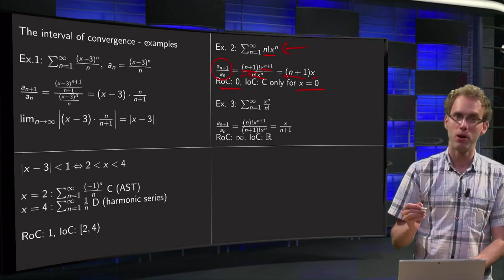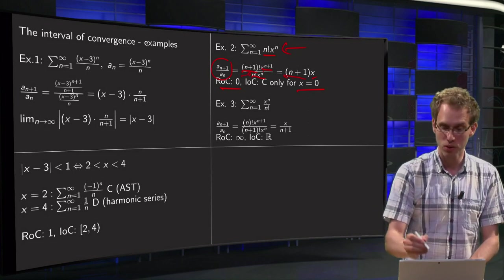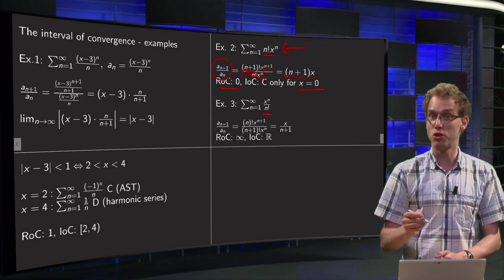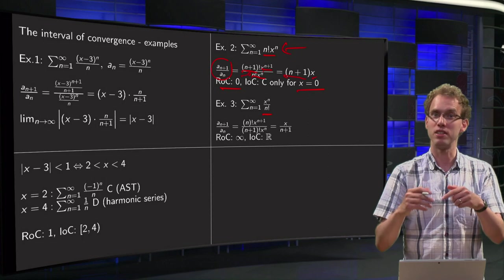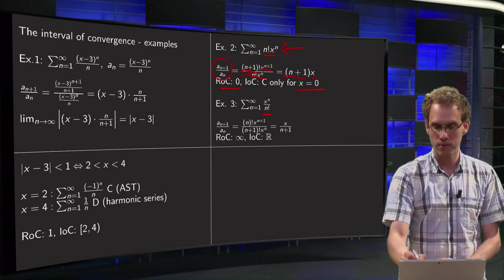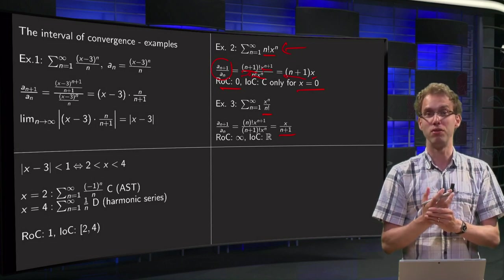Next example, well similar one, but now instead of multiplying by n factorial, we are going to divide by n factorial. So ratio test is almost the same. The only thing which is happening is instead of coming in the numerator, the n+1 now comes in the denominator, so we get 1/(n+1) over here.